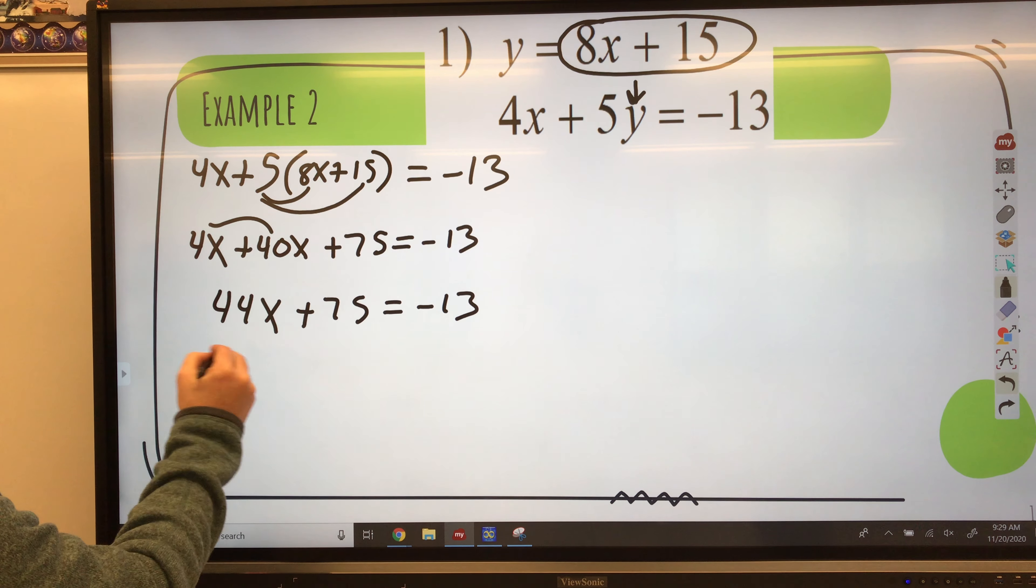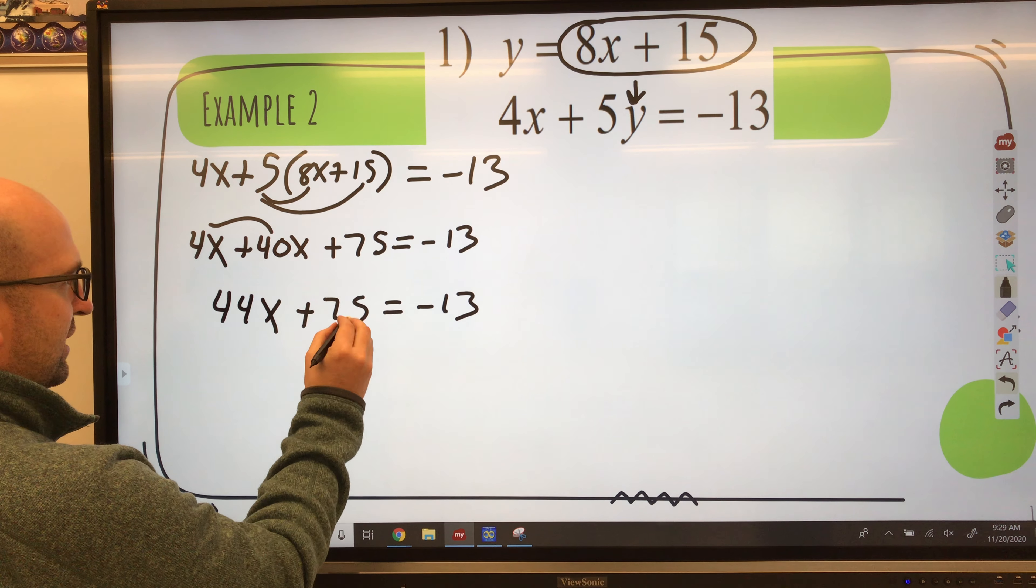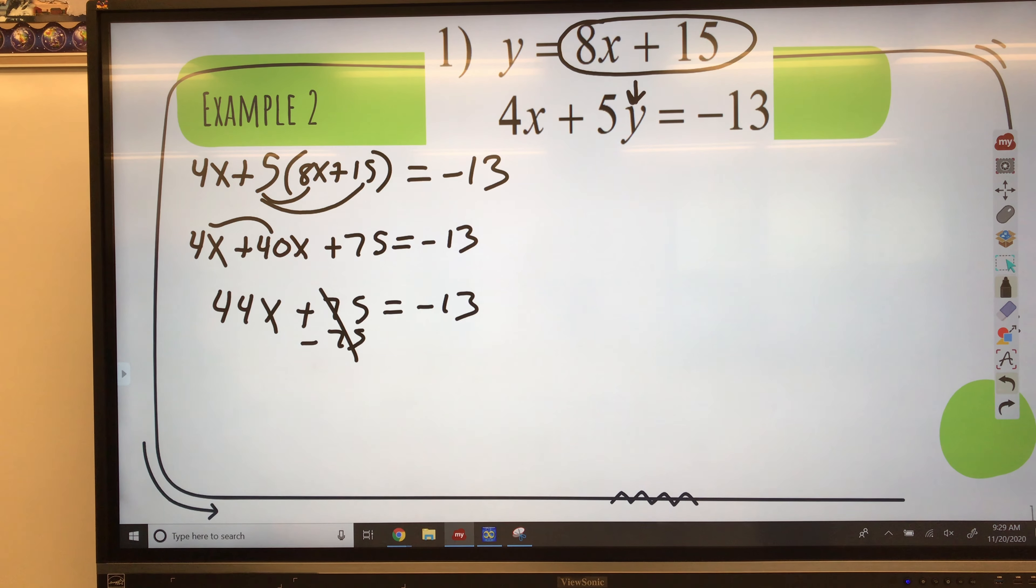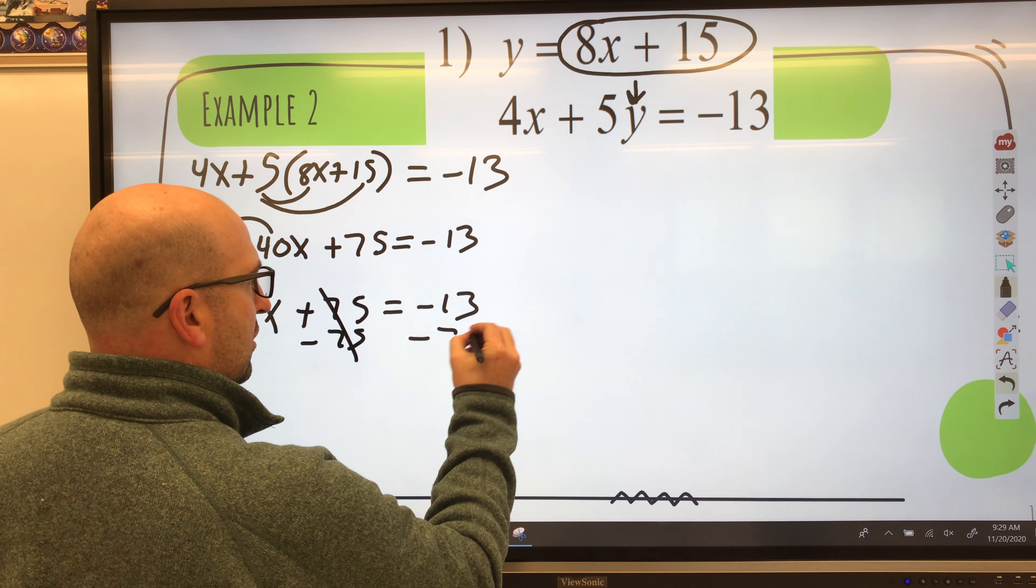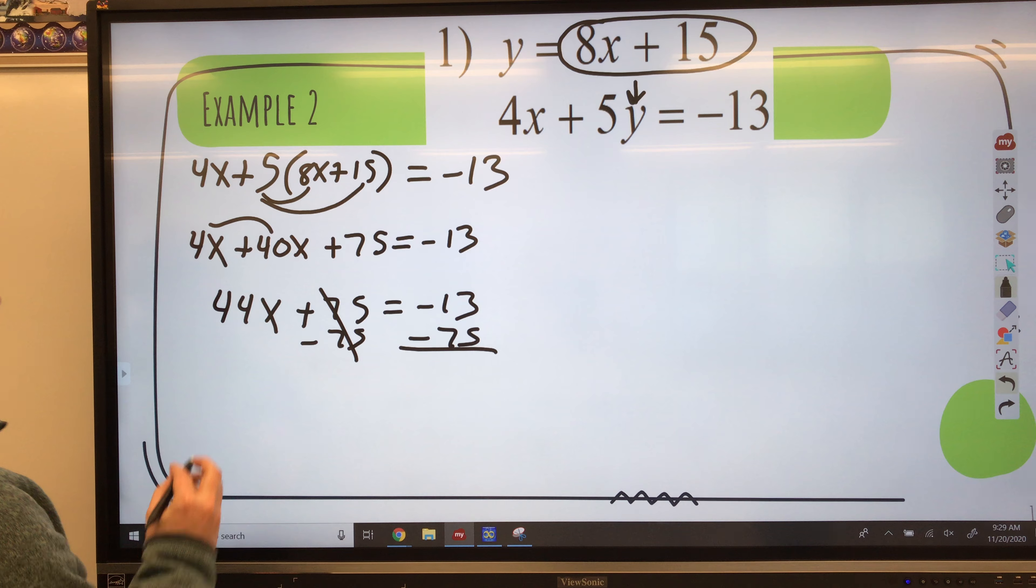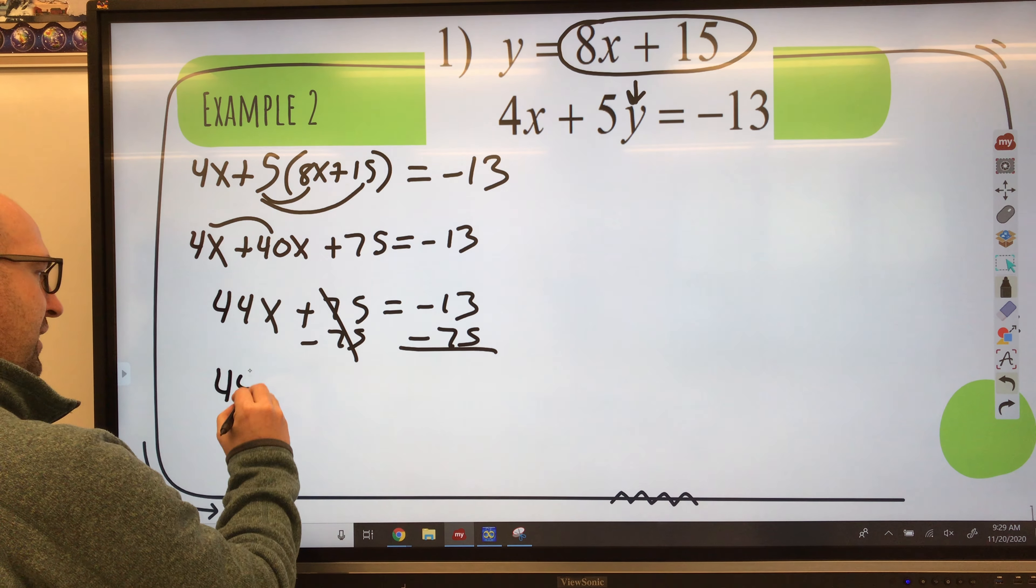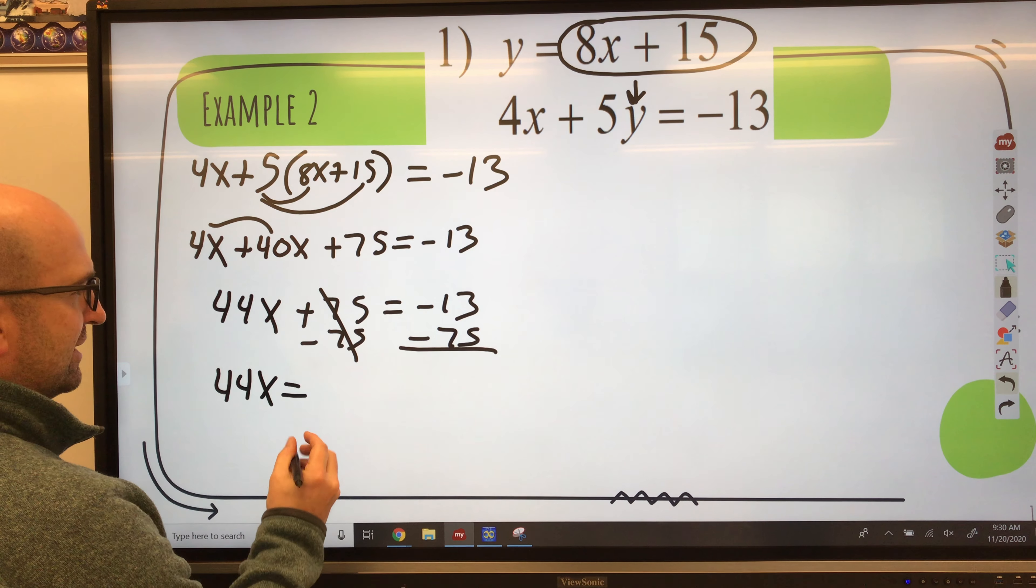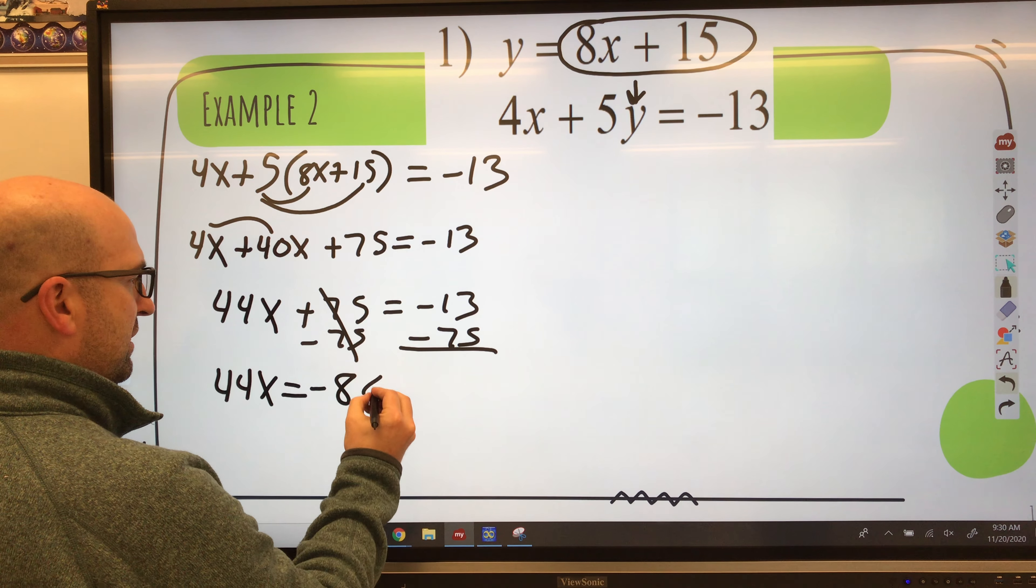I want to get the x by itself. So I'm going to take this 75. Do its inverse. Subtract 75. What I do to one side I must do to the other. That gives me 44x equals negative 13 minus 75. It gives me negative 88.